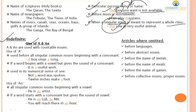Use of 'a' and 'an': 'A' and 'an' are used with countable nouns — those nouns that we can count. First, use of 'a': it is used before all singular common nouns beginning with a consonant sound.